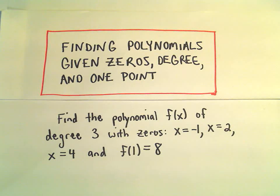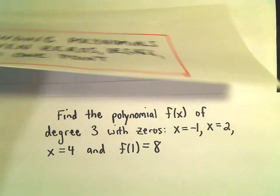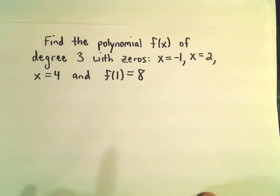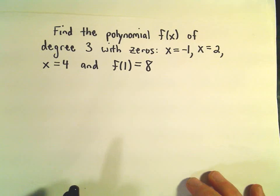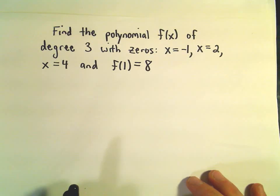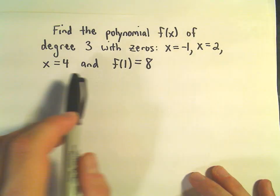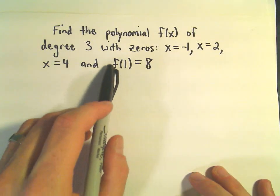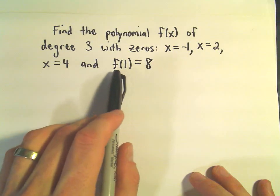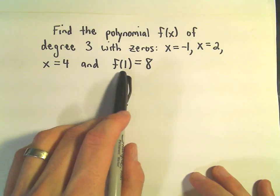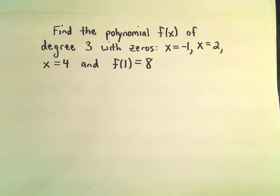In this video, we're going to do an example of finding a polynomial given some zeros, degree, and a point. In this case, we want a polynomial of degree 3 with zeros at negative 1, positive 2, positive 4, and satisfies the condition that if you plug 1 in, we get 8 out.